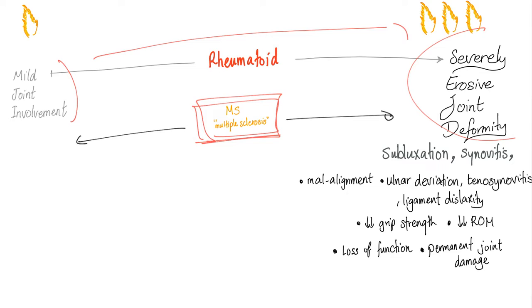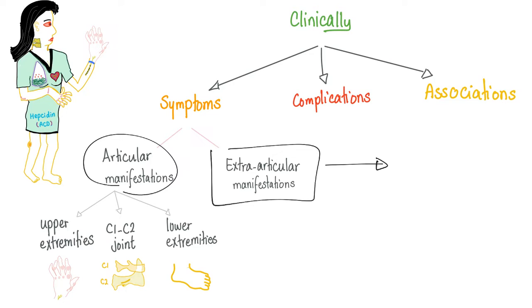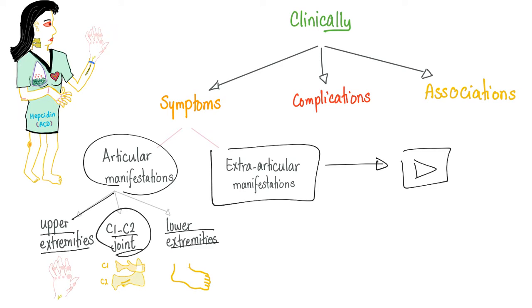Clinically, rheumatoid arthritis has symptoms, complications, and associations. Symptoms could be articular — which is the topic of today's video — and extra-articular manifestations, which we'll discuss in a next video. Articular symptoms could be upper extremities, C1-C2 joint, and lower extremities. The C1-C2 joint will also be discussed in a separate video.